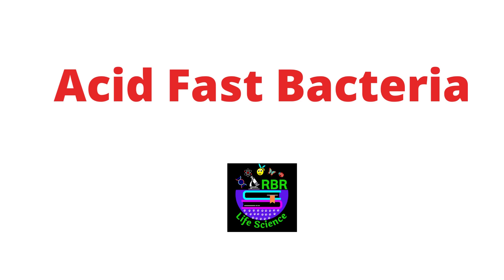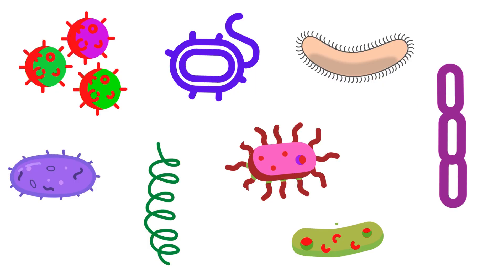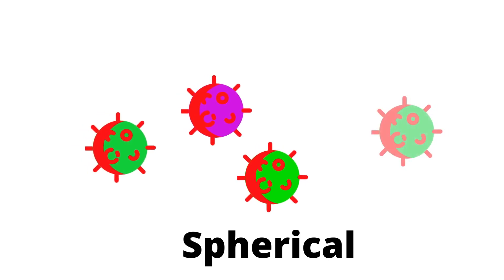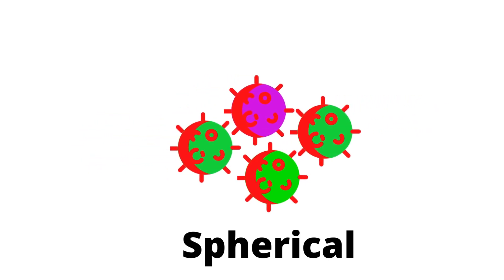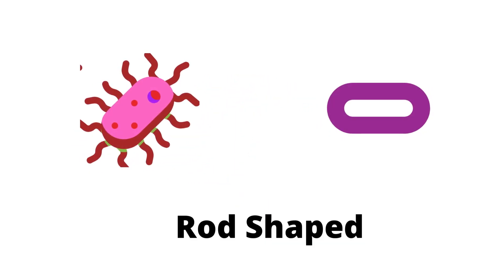Hello everyone, welcome to RBR Life Science. In this video we are going to discuss about acid-fast bacteria. Bacteria have different sizes and shapes — for example, some bacteria are spherical in shape, while some bacteria are rod-like.